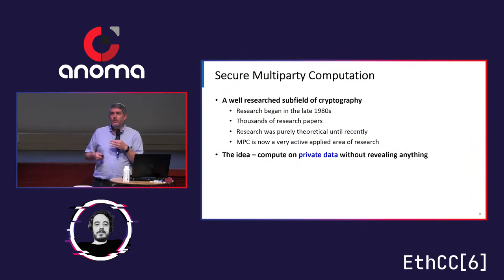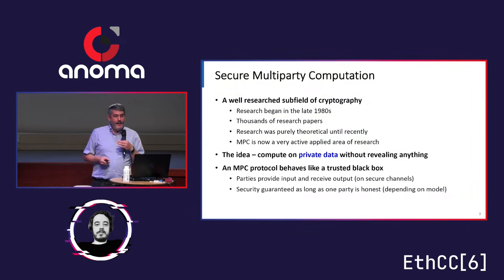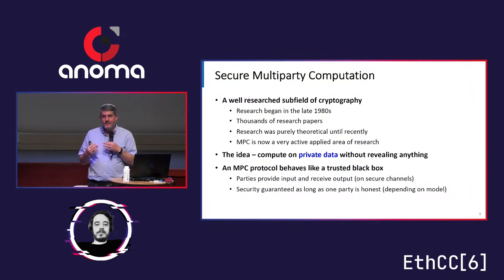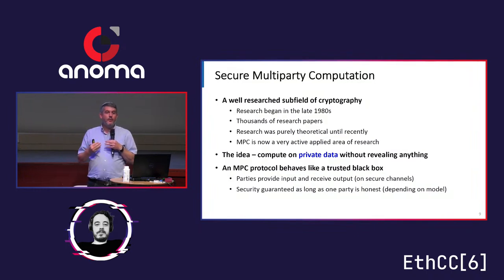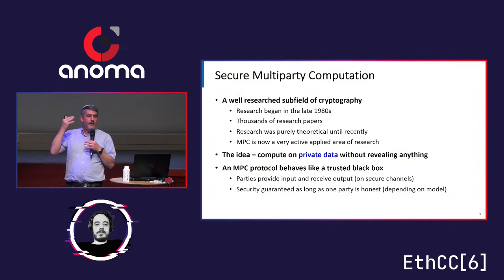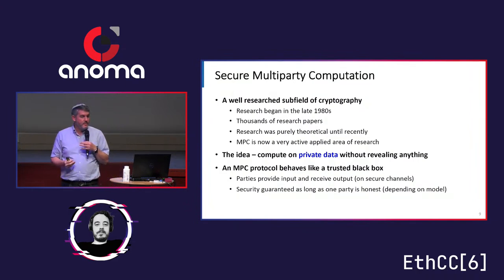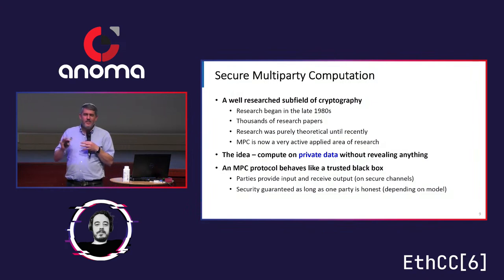The basic idea is to be able to compute on private data without revealing anything but the result of that computation. The best way to think about it — and interestingly, not only is this the easiest way, it's also how we formulate it mathematically in our formal definitions — an MPC protocol achieves essentially a trusted party without trust. It's actually very aligned with everything in the blockchain space. We have a set of parties interacting and sending messages with no trusted party at all, but the MPC protocol behaves as if there was an incorruptible trusted party that everybody sends their input to, that party computes the function and gives the output to the parties. Security is maintained as long as at least one of the real parties is honest.